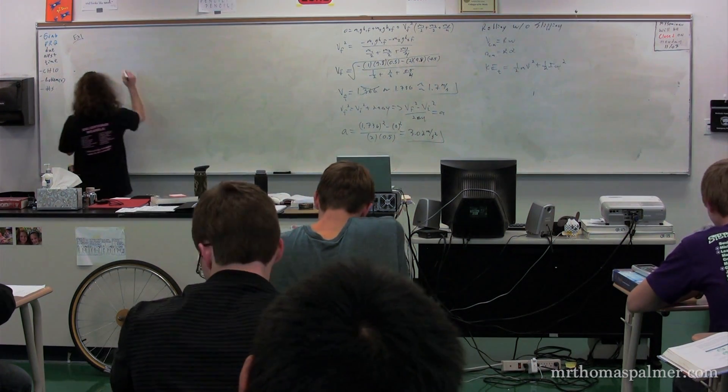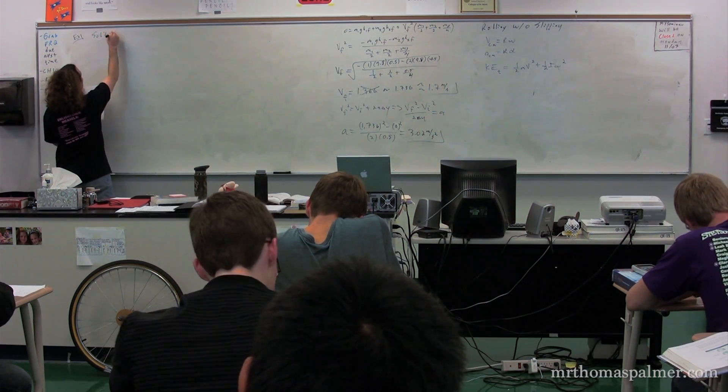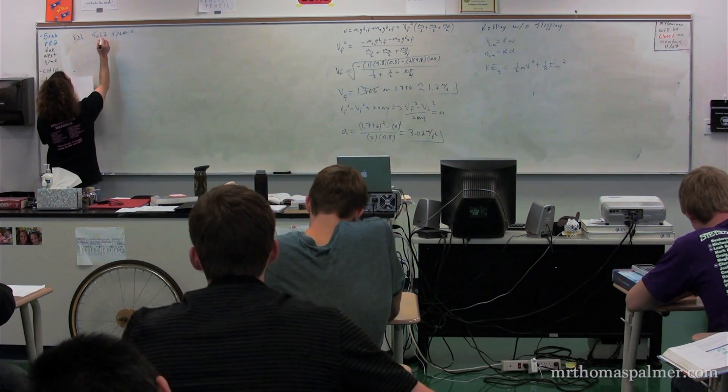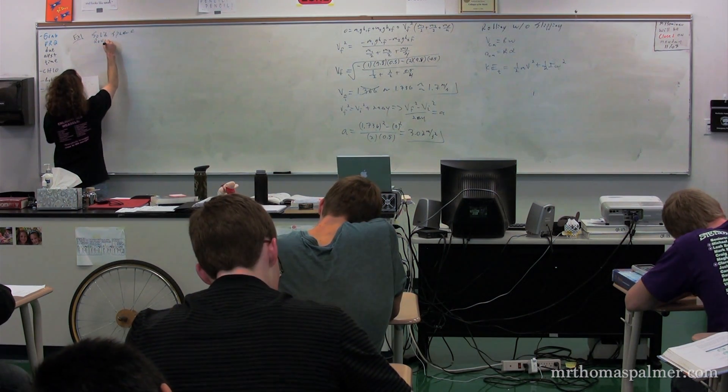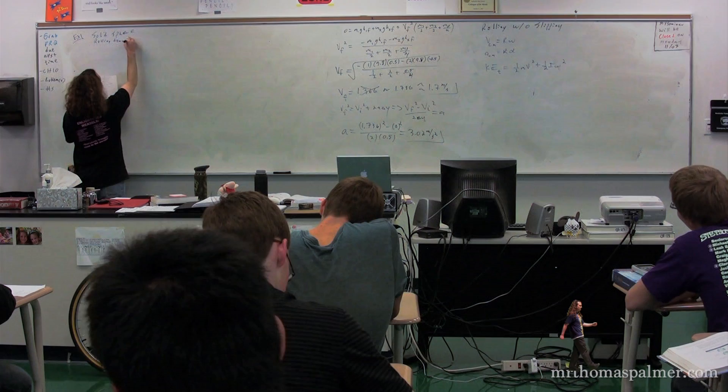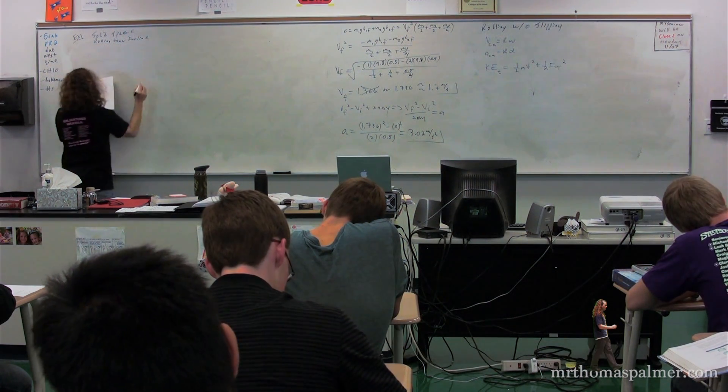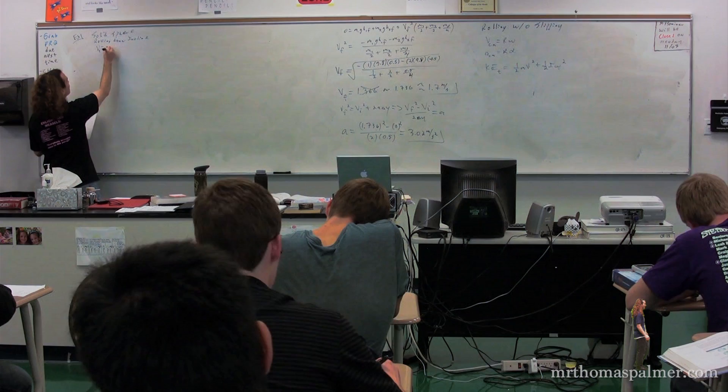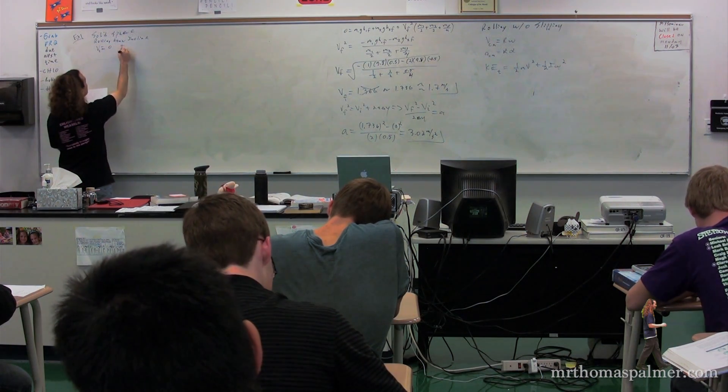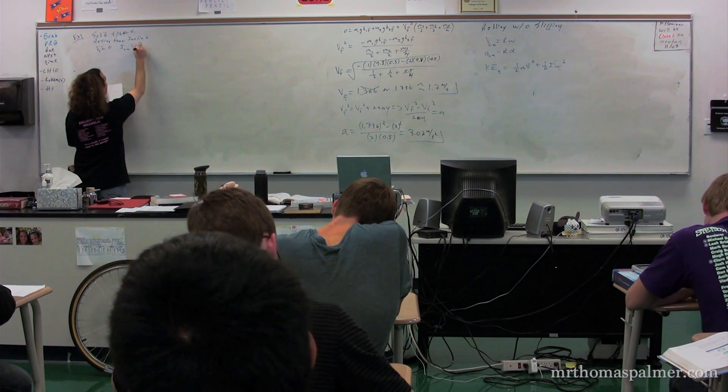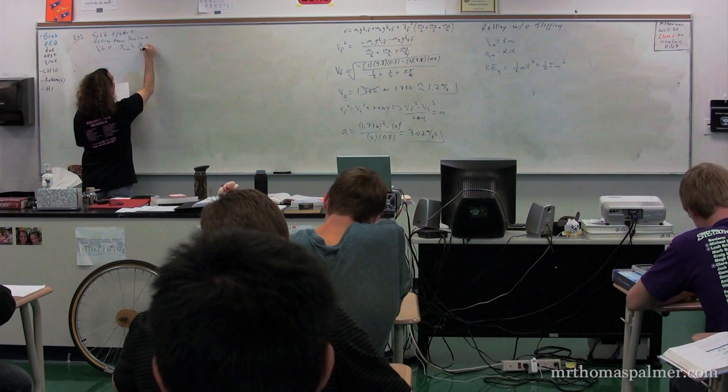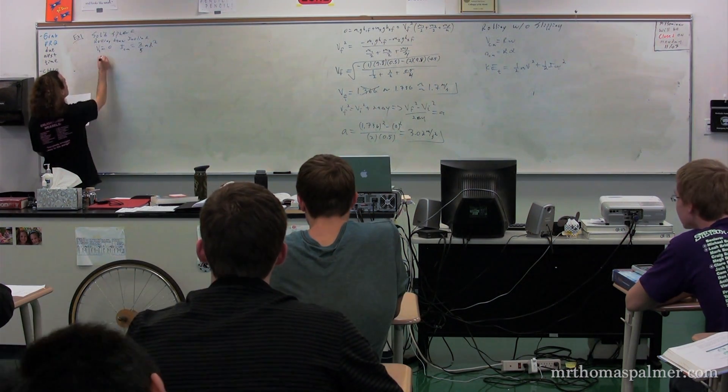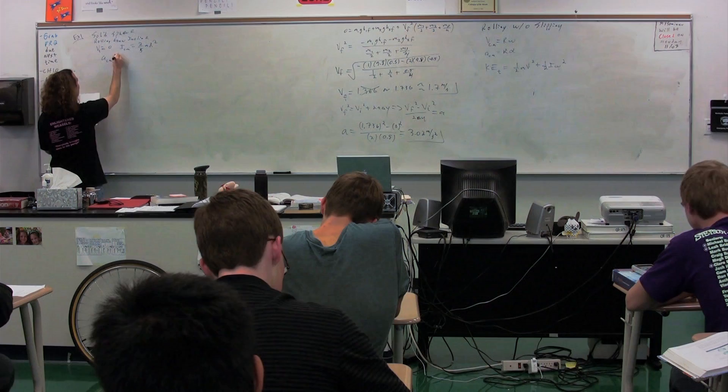So we have a solid sphere which is rolling down an incline. It is rolling without slipping while going down the incline. We're going to say the initial velocity of the object is equal to zero. We know the moment of inertia about the center of mass of a solid sphere is two-fifths mR squared. And we're trying to figure out the acceleration of the center of mass of this object.